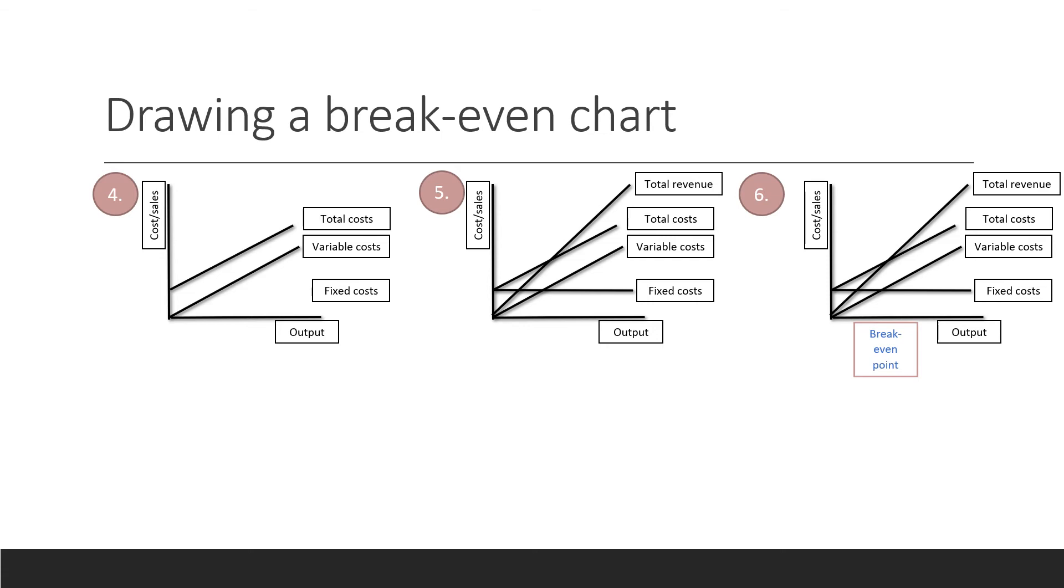Step five, you need to draw your total revenue line. If no units are sold, total revenue will be £0. As sales increase, the total revenue will also increase. The total revenue line therefore slopes upwards from zero.